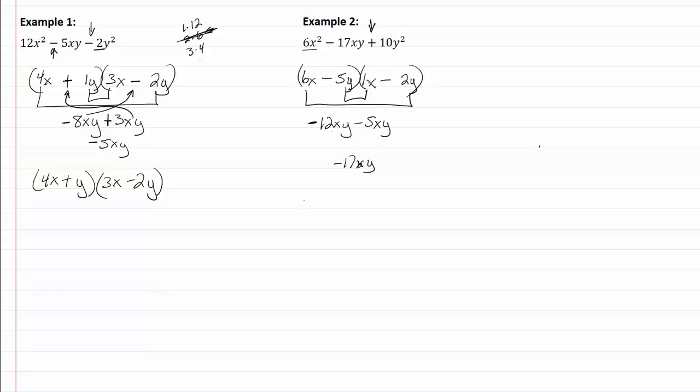So now I have it factored, so my answer then is (6x - 5y)(x - 2y) and there's my answer. Okay, let's go.